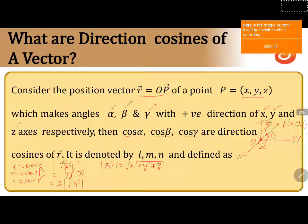So this is the angle made by the vector r, that is point P, with respect to x, y, and z axes. This is how the direction cosines of a vector can be discussed.